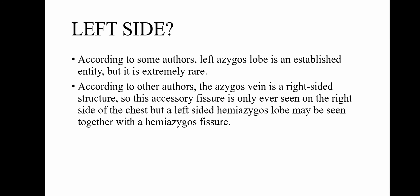According to some authors, a left azygous lobe is an established entity but it is extremely rare. However, according to other authors, the azygous vein is a right-sided structure so this accessory fissure is only ever seen on the right side of the chest. A left-sided hemiazygous lobe may be seen together with the hemiazygous fissure.